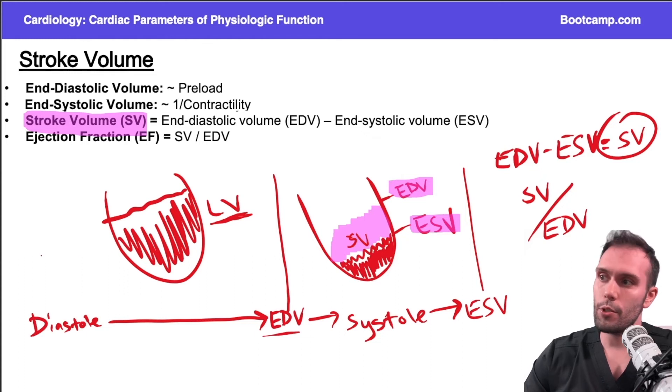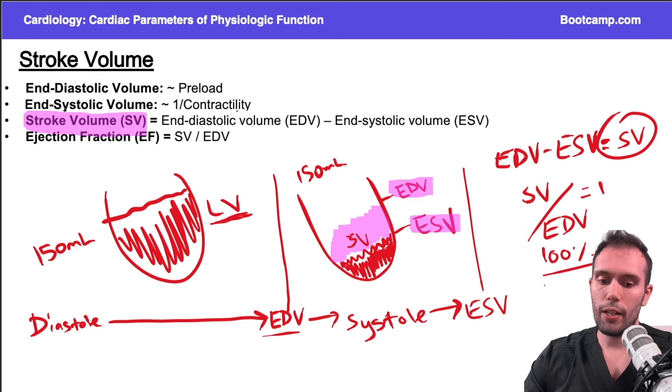If I ejected all of the blood in the left ventricle, then my stroke volume would be the same as the end-diastolic volume. If I started with, I'm just going to make a number up, 150 milliliters, and my stroke volume was 150, I would have ejected all of that blood out. This ratio would be equal to one, that would be 100% of the blood ejected out.